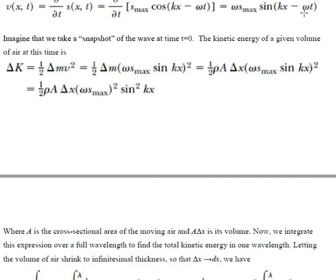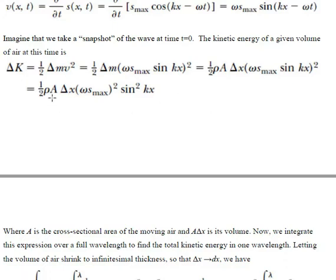At t = 0, the time-dependent term vanishes. So delta K comes out to be half·rho·A·delta x·(ω·S_max)²·sin²(kx). Here rho is the density of air, A·delta x is the volume, and (ω·S_max)² and sin²(kx) represent the velocity squared term. This is the kinetic energy associated with a small arbitrary volume element.